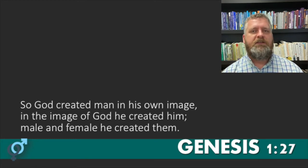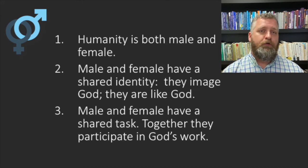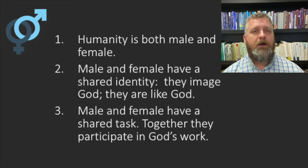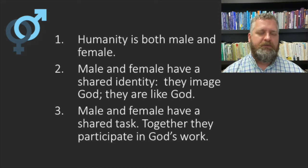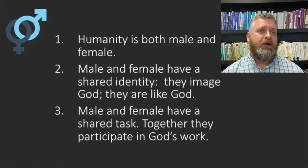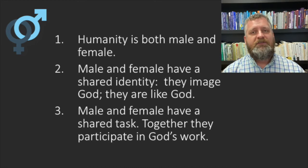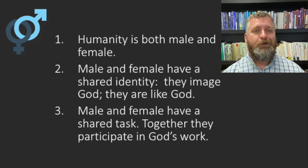Genesis 1:27: 'So God created man in his own image. In the image of God he created him. Male and female he created them.' Here are things both schools of thought agree on: humanity is both male and female; both male and female are human and share equal and common humanity. Male and female have a shared identity in that they image God — that is their task. And they have a shared task: being fruitful, multiplying, cultivating and stewarding the creation. Both schools of thought pretty well agree on all of that.